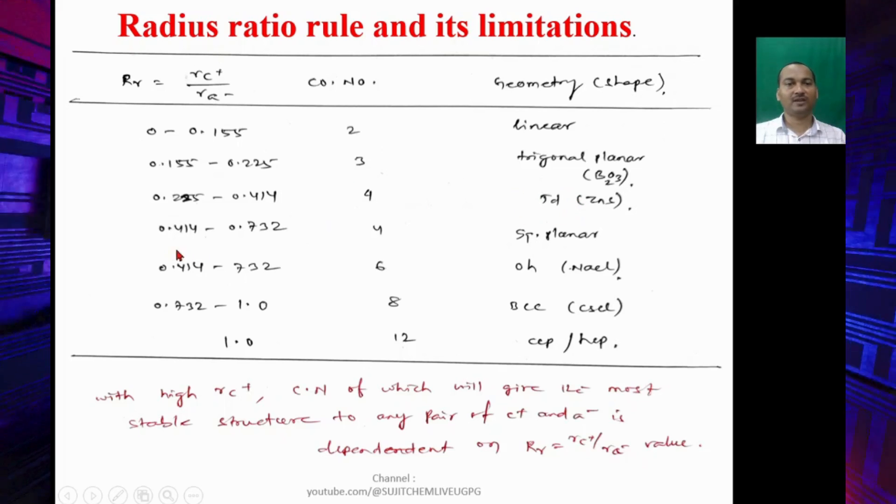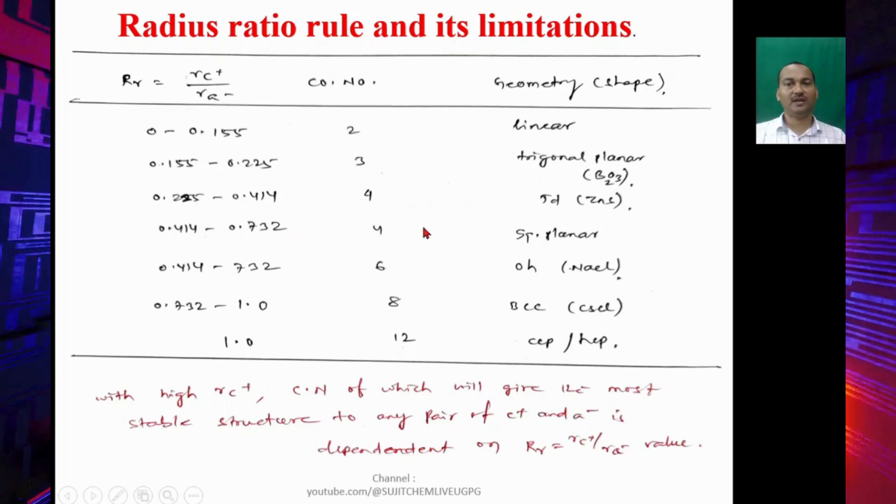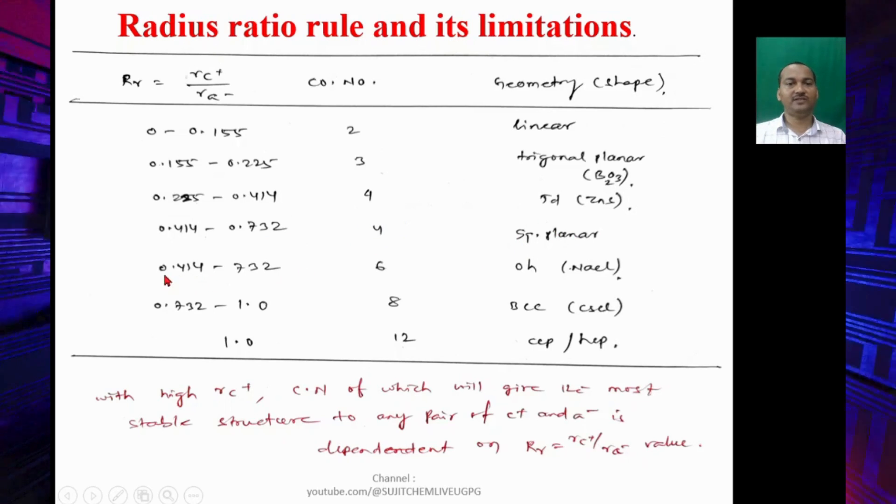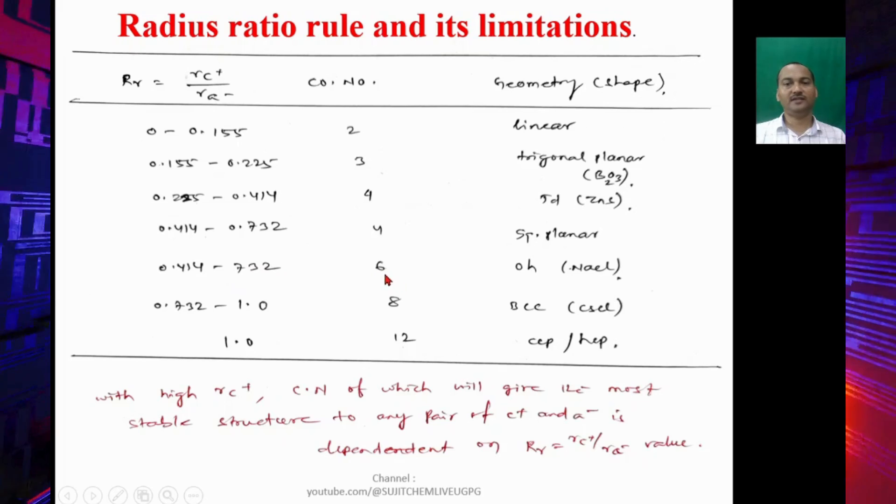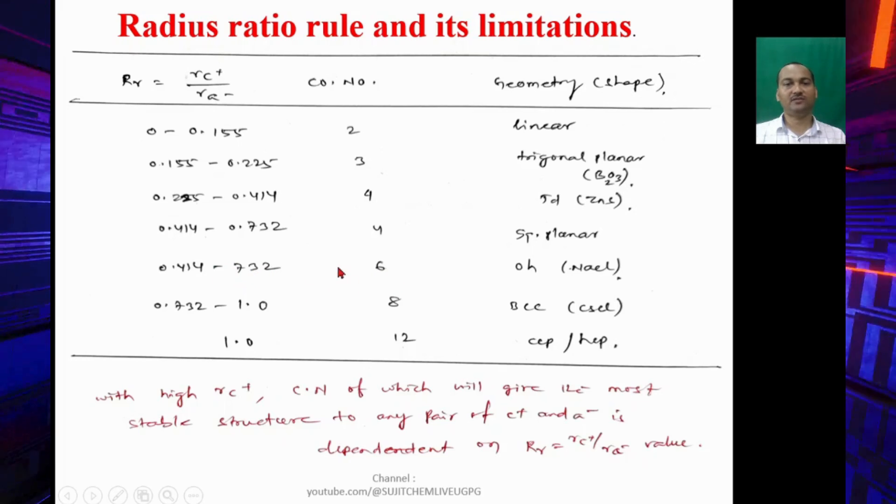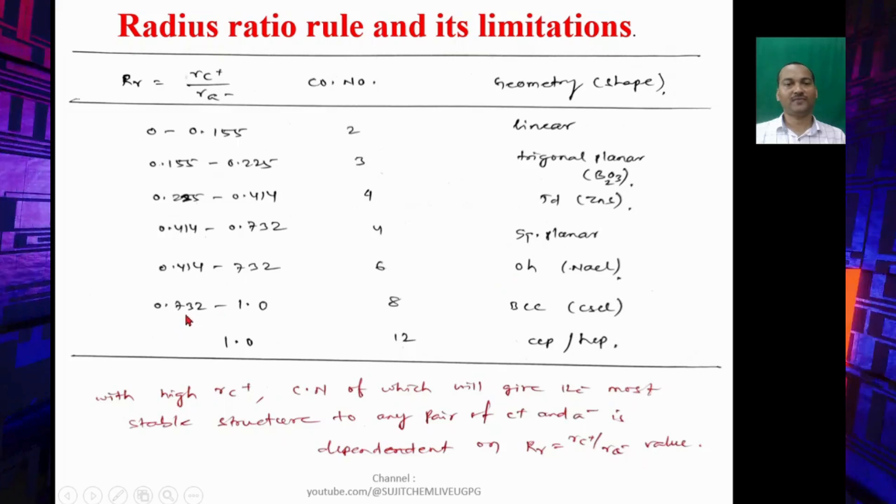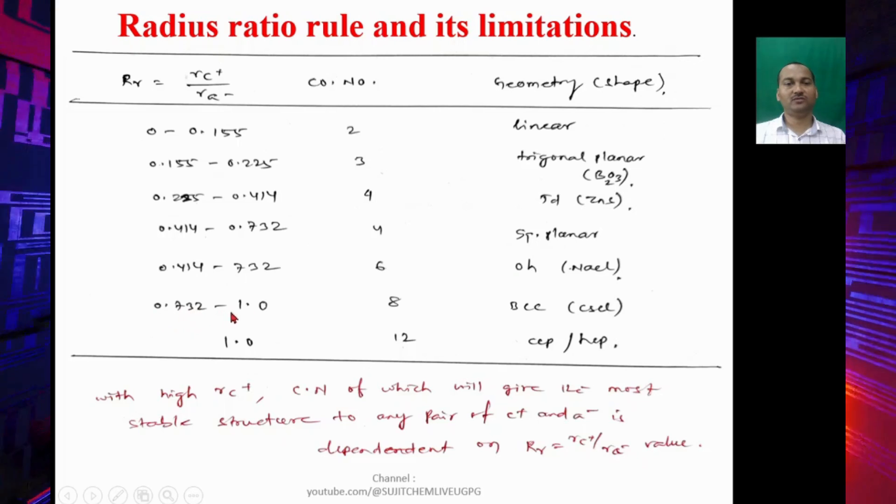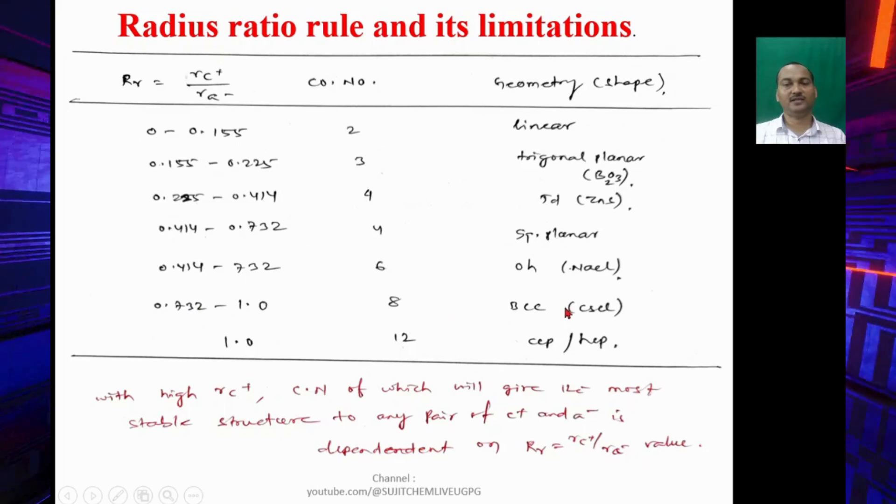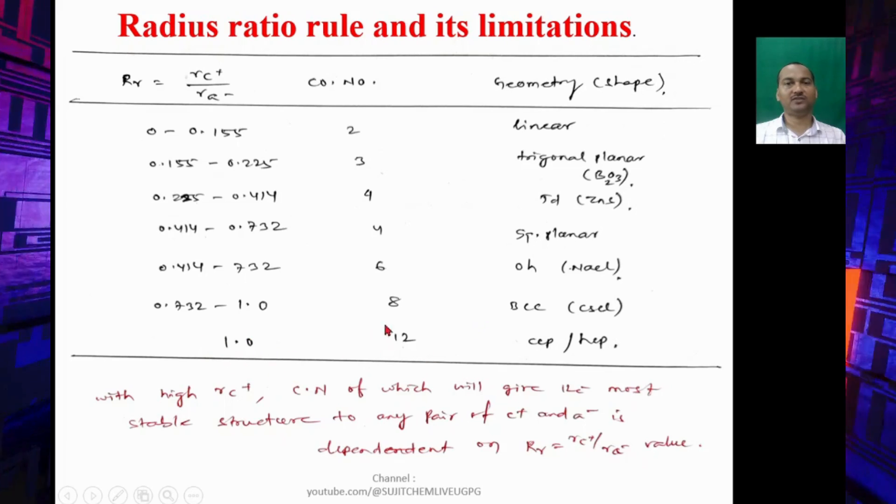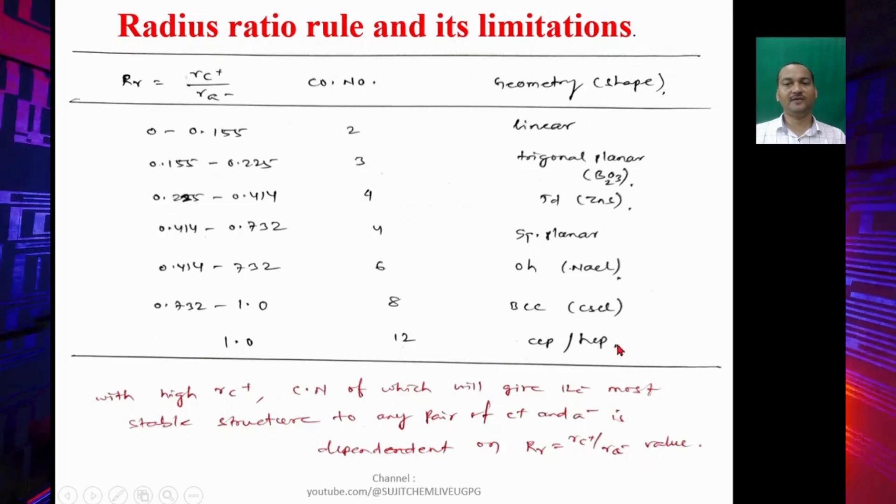If the value is 0.414 to 0.732, coordination number is 4 and it is square planar. Similarly, the value 0.414 to 0.732, here it is 6—so here is the mistake, it should be 6—and the structure would be octahedral. 0.732 to 1, coordination number 8, this is called BCC crystal. If it is 1, coordination number 12, that will be CCP or HCP crystal.